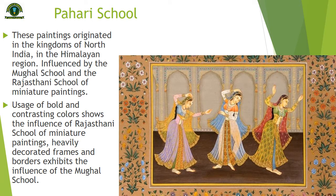The Pahari School of Miniature Painting emerged in the 17th century. These paintings originated in the kingdoms of North India in the Himalayan region. Influenced by the Mughal School and the Rajasthani School, the Pahari style flourished in the Jammu and Gharwal regions from the 17th to 19th century. Usage of bold and contrasting colors shows the influence of the Rajasthani School, while heavily decorated frames and borders exhibit the influence of the Mughal School.